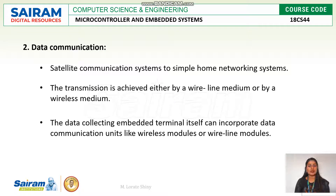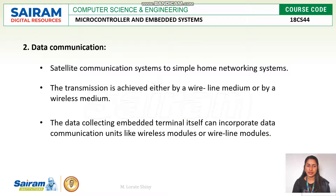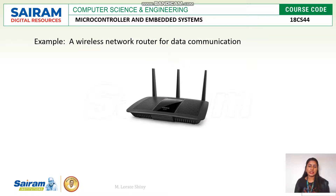Second, data communication. Embedded applications with data communication functionality are used in various applications, from complex satellite communication systems to simple home networking systems. Data transmission can be achieved by wireline or wireless medium. Wireless module examples include Bluetooth, ZigBee, Wi-Fi, and GPRS. An example embedded application for data communication is a network router, which acts as a mediator providing functionality like security and monitoring.